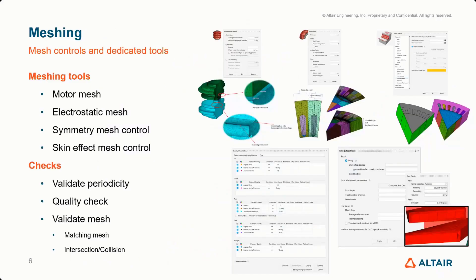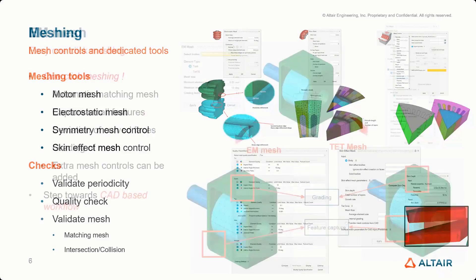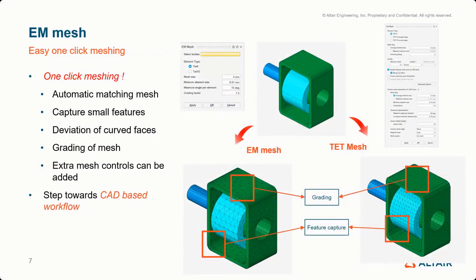Improving over legacy Flux to gain advantage over competition, new dedicated mesh controls and checks are added to offer the typical SimLab advanced and easy-to-use mesh environment. You can see motor mesh and electrostatic mesh created especially for these two types of physics, as well as asymmetry mesh controls, skin effect mesh controls, and checks to validate the mesh depending on flux parameters. One of the big news is the EEM mesh tool that my colleague Karoum will present in detail at the end of my presentation.